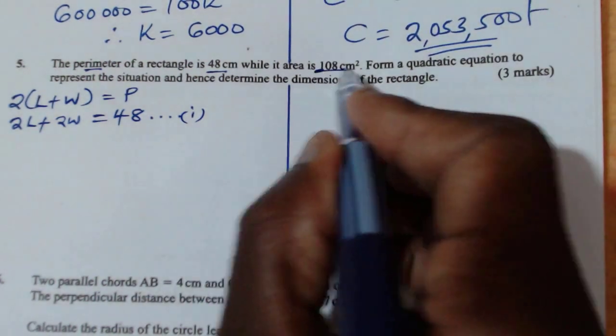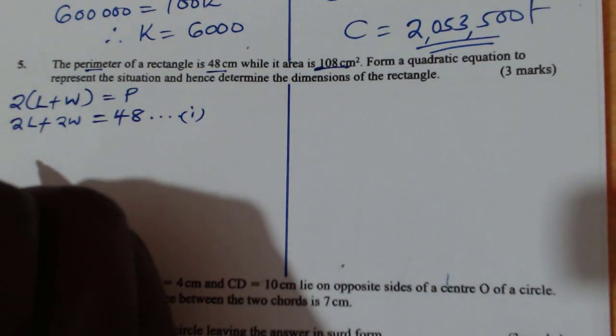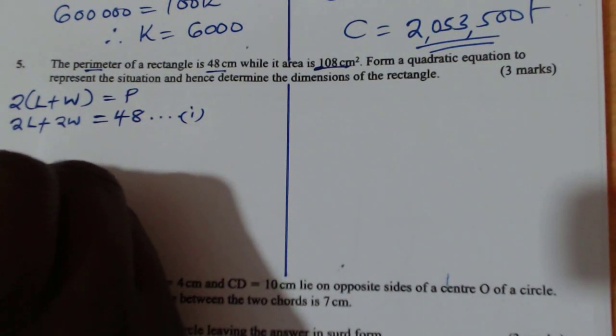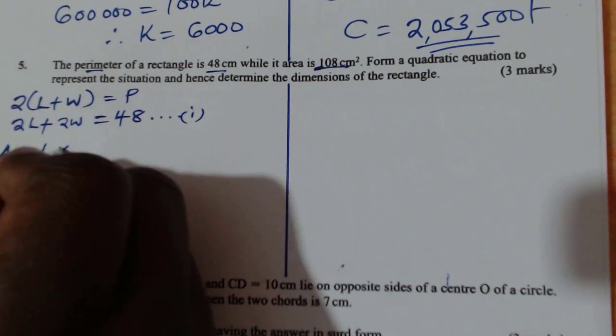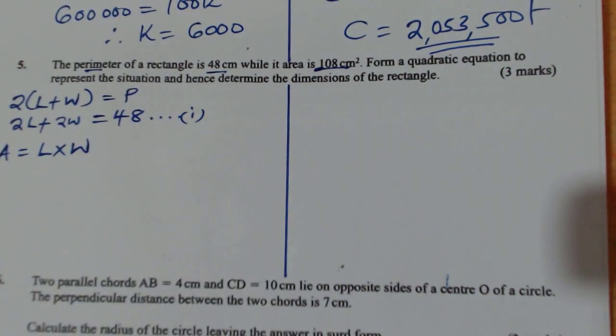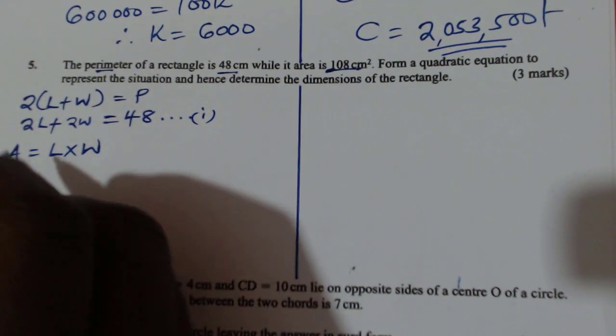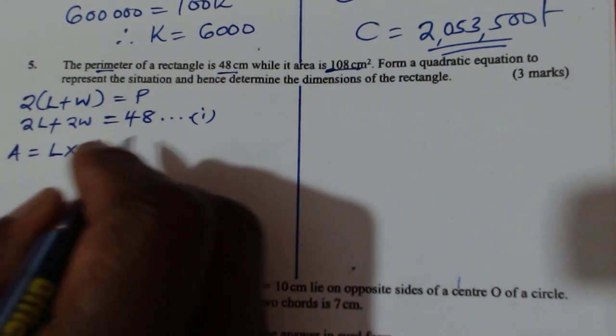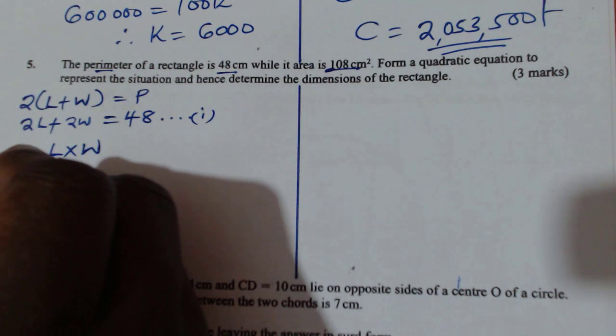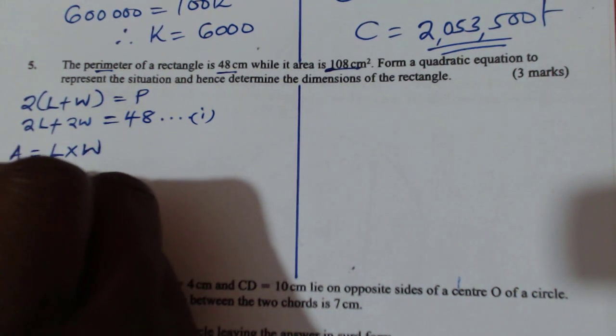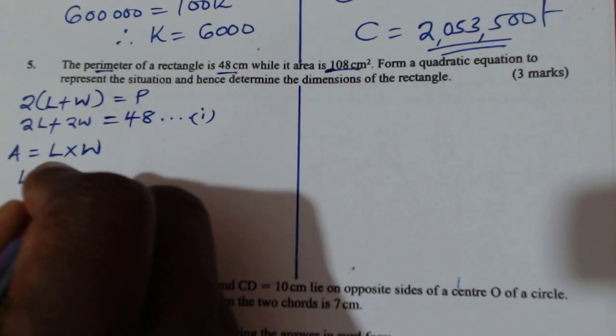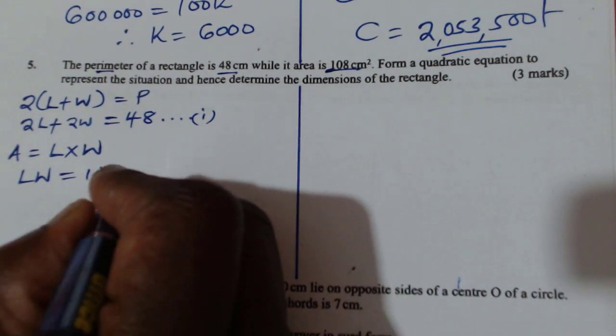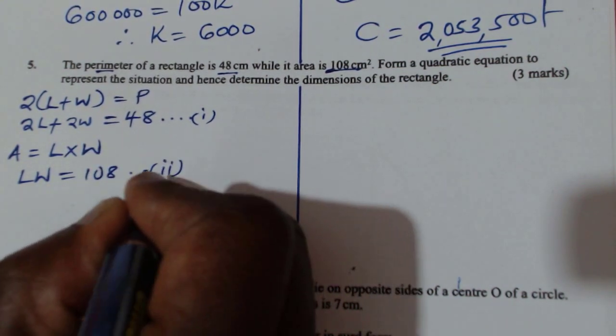Then the area is 108. So how do you get the area? Area is obtained by length multiplied by the width. So area is 108. When you multiply length times width, we get LW equals 108. This is the second equation.